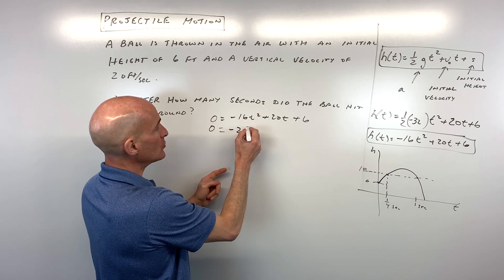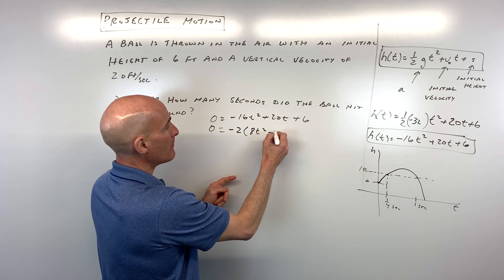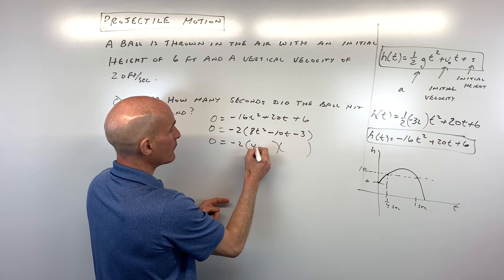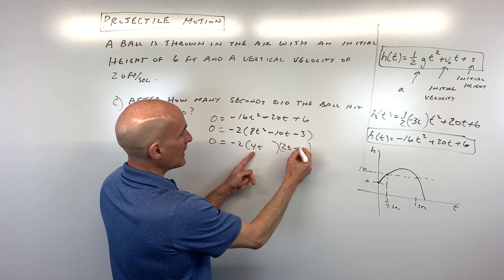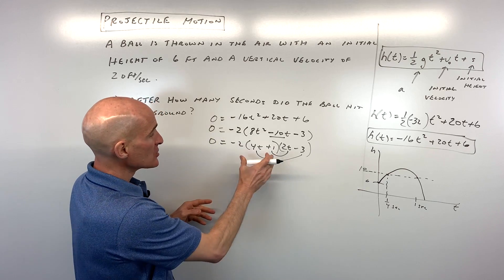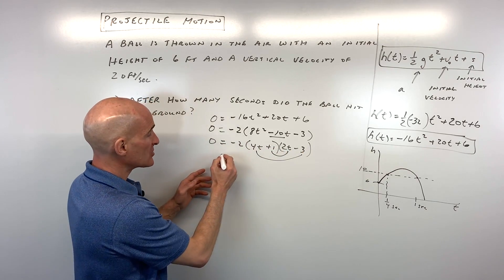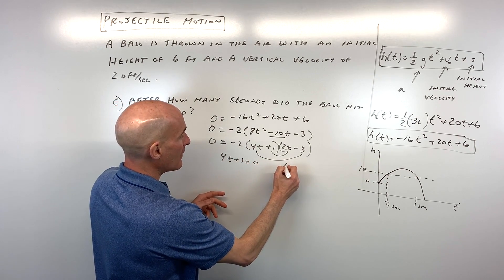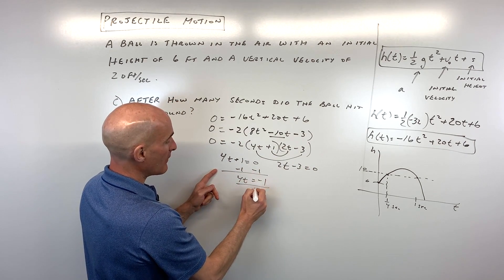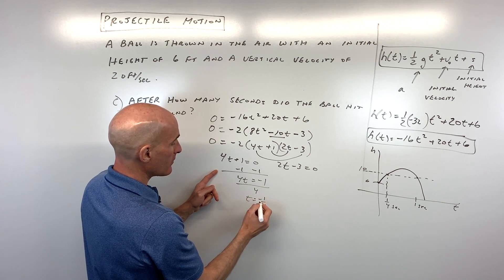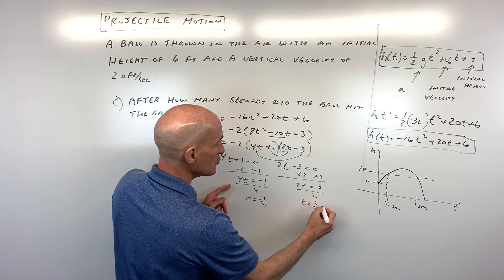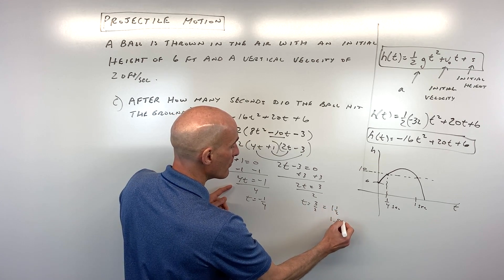Factoring out negative two from -16t² + 20t + 6 gives us -2(8t² - 10t - 3). This factors further to -2(4t + 1)(2t - 3). Setting each factor equal to zero: from 4t + 1 = 0, subtracting one and dividing by four, we get t = -1/4. From 2t - 3 = 0, adding three and dividing by two, we get t = 3/2, which equals one and a half seconds.